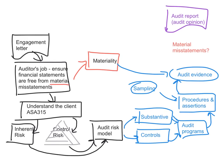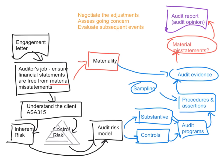There are several things that happen between finding our list of errors and coming up with the audit opinion. We negotiate the adjustments management are going to make, assess going concern, evaluate subsequent events, and ensure we've appropriately documented everything before we issue the audit opinion. These don't fit neatly elsewhere — there's no point assessing going concern right at the beginning when you're still learning about the client.